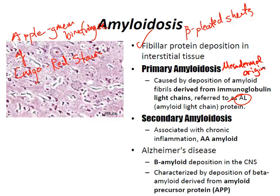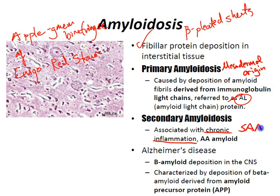Secondary amyloidosis is associated with chronic inflammation. You'll see AA amyloid, caused by deposition of the AA protein formed from a precursor called serum amyloid-associated protein, or SAA. That's the precursor for AA protein.